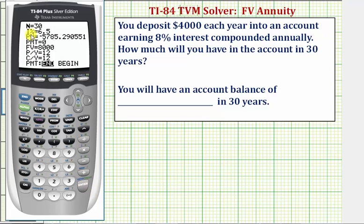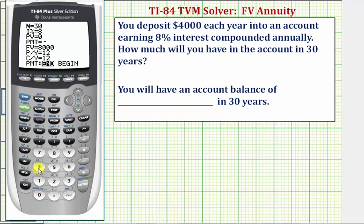The interest rate as a percentage is 8%, so we enter 8 and press Enter. The present value, or the starting balance of the account, would be zero dollars, so we enter zero and press Enter. The payment is $4,000 each year, and because we're paying this amount, the payment is going to be negative 4,000. The future value we don't know — we're trying to solve for this, so we'll come back to it.